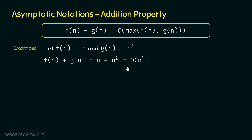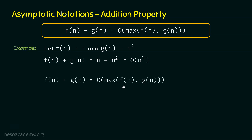How can we say n square is the upper bound of n plus n square? Here we just have n square, and here we have n plus n square. This is because we can always multiply n square on the right hand side by some bigger constant and make the right hand side greater than the left hand side. Hence, n plus n square is big O of n square. So f(n) plus g(n) is big O of maximum of f(n), g(n), which is the dominating term.